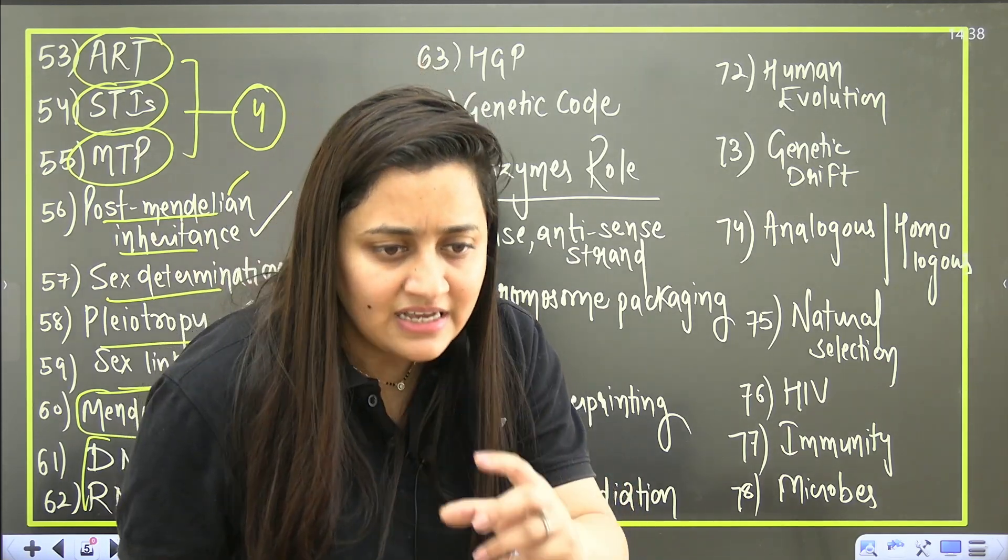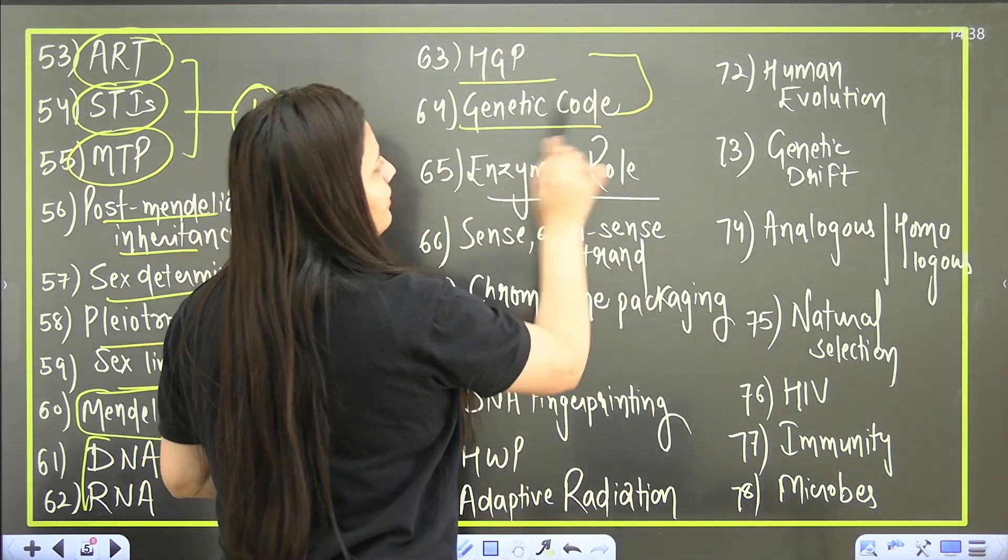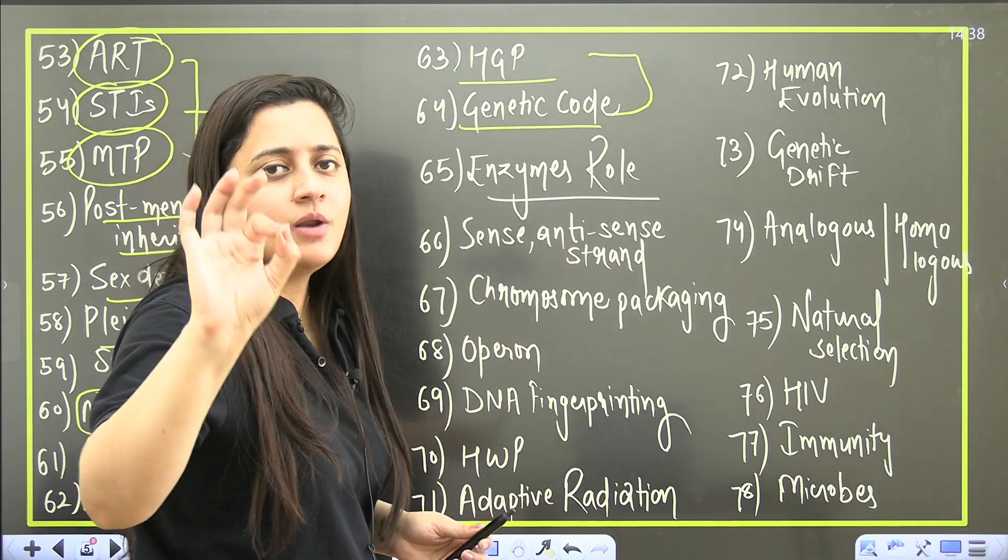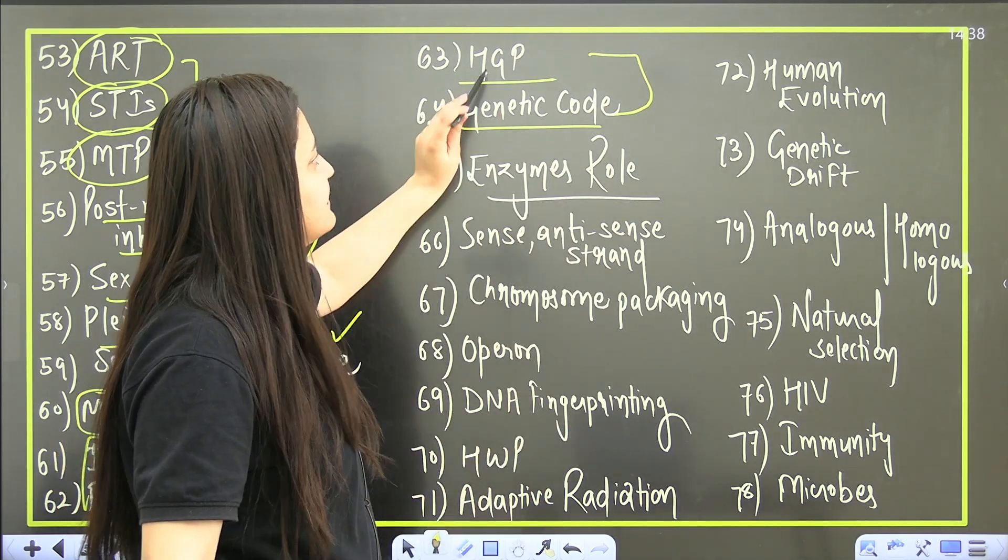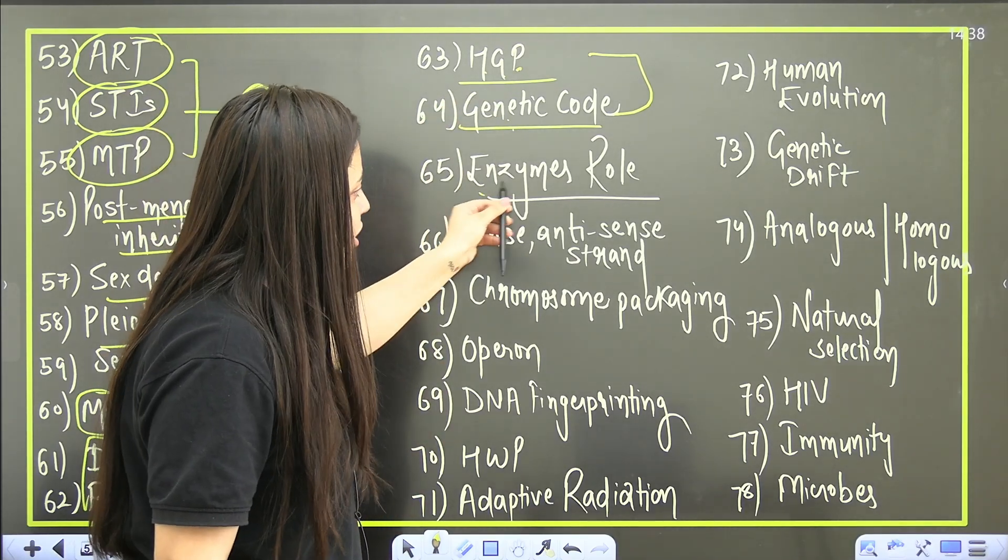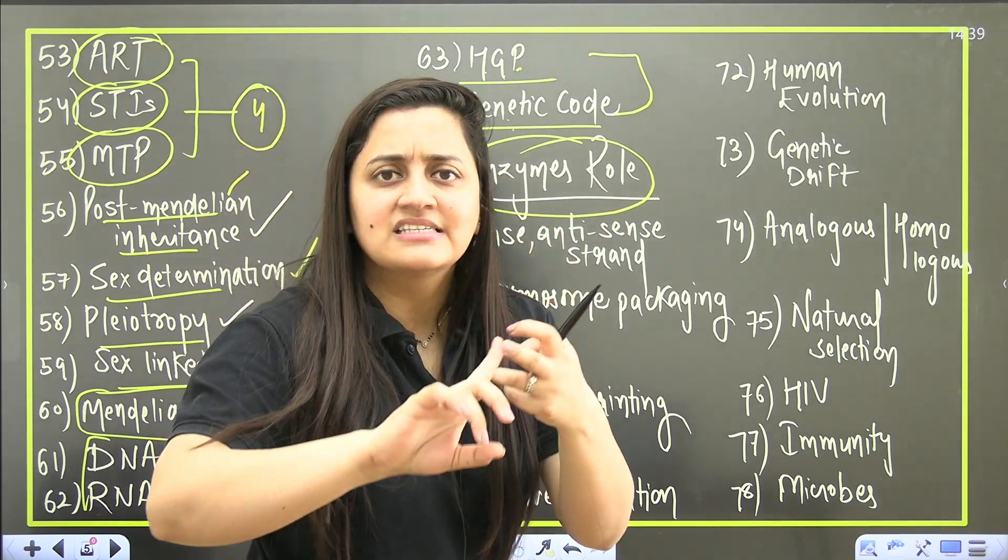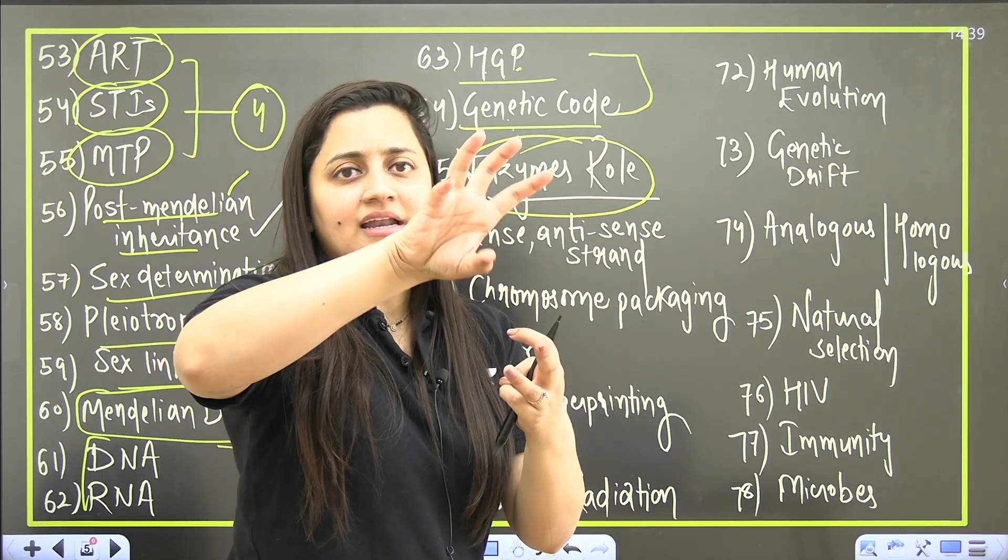Now DNA, RNA part - individually the comparison, the structure, nitrogenous bases, this is what you people need to know. Then HGP, genetic code - please do not leave it. If you are planning to leave molecular basis of inheritance, at least read these two topics, the most important ones. The role of enzymes in all the processes of DNA replication, transcription, translation - what those enzymes are doing, what is the role of helicase, what is the role of ligase, this is something that you should definitely know.